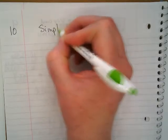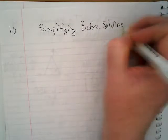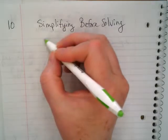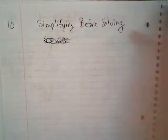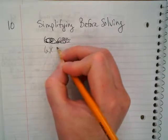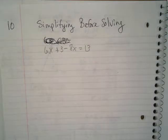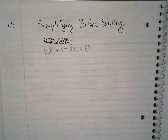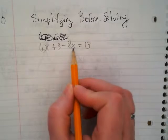We're going to try simplifying before solving. 6X plus 3. Oops, I wrote it wrong and this is why I should use pencil up here. 6X plus 3 minus 8X equals 13. I don't use pencil up here because it doesn't show up as well, but you guys can see that? Yeah. What do you see that's like? 6X and 8X. So we want to combine like terms and these two are like terms, yes? Yes.